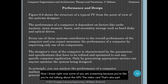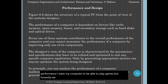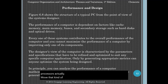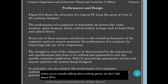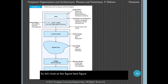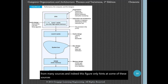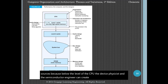We don't start to talk about GPUs and multimedia from a systems architecture standpoint unless we go back to how we use multimedia, which is a very math-intensive topic on how processors actually move that kind of data. From a systems architecture standpoint, unless you're actually talking about writing games, we don't talk about GPUs. Figure 6-8 shows the structure of a typical PC from the point of view of the systems designer, and what this demonstrates is that improved computer performance can come from many sources. This figure only hints at some of these sources, because below the level of the CPU, the device physicist and the semiconductor engineer can create intrinsically faster devices.